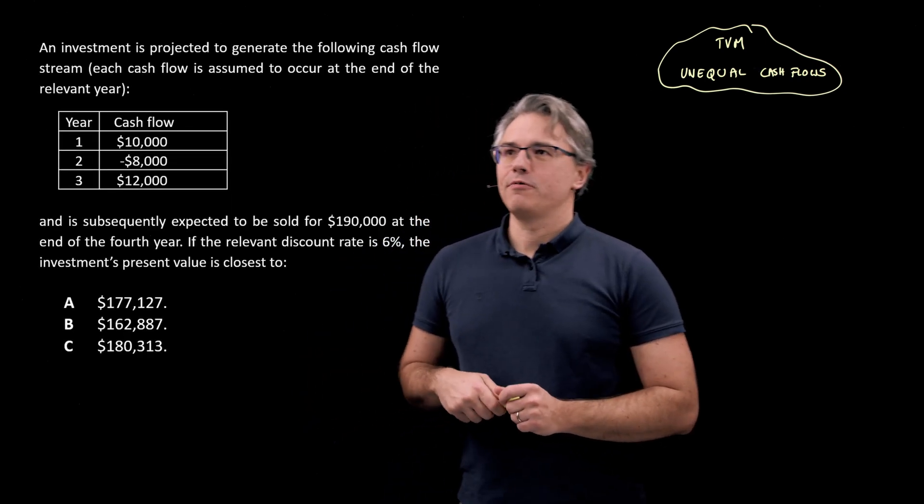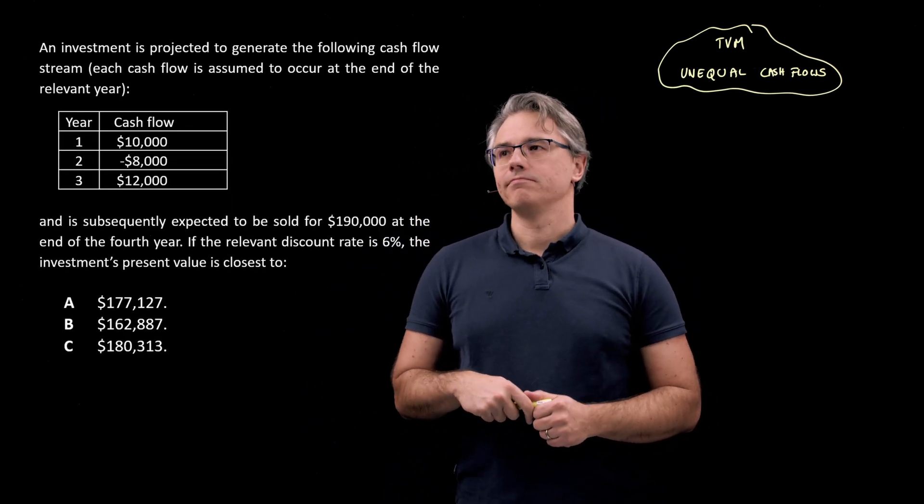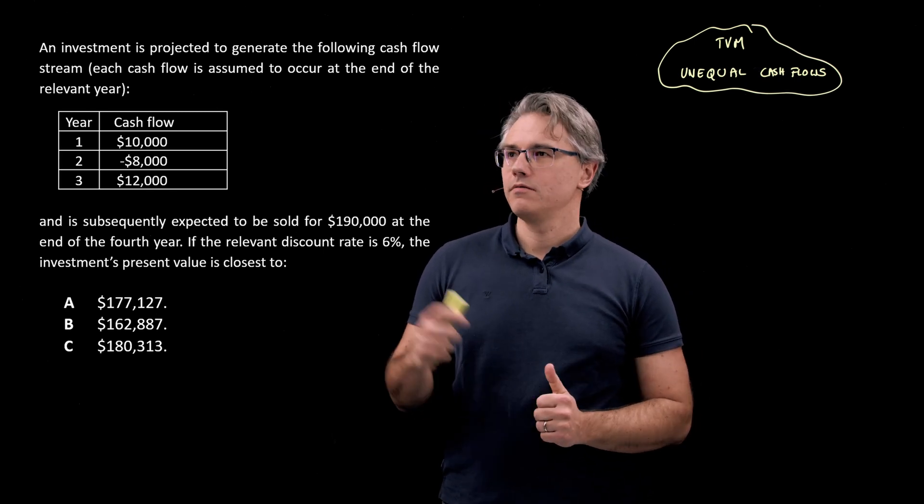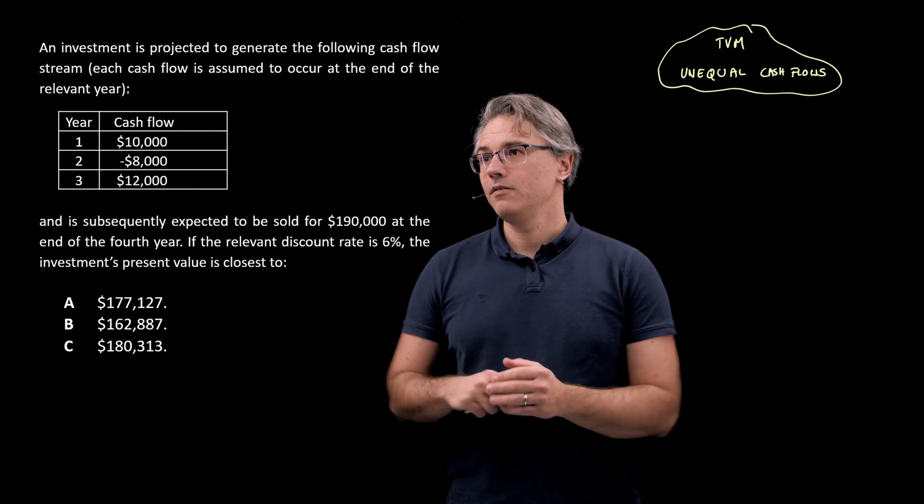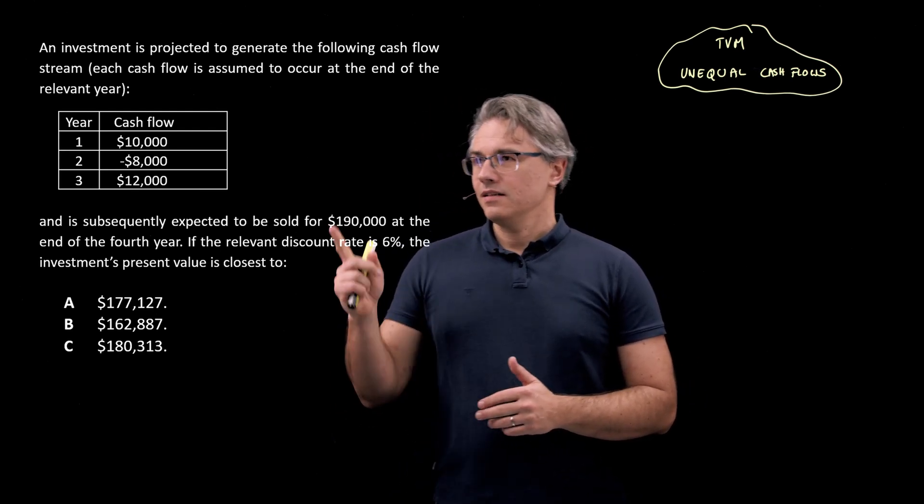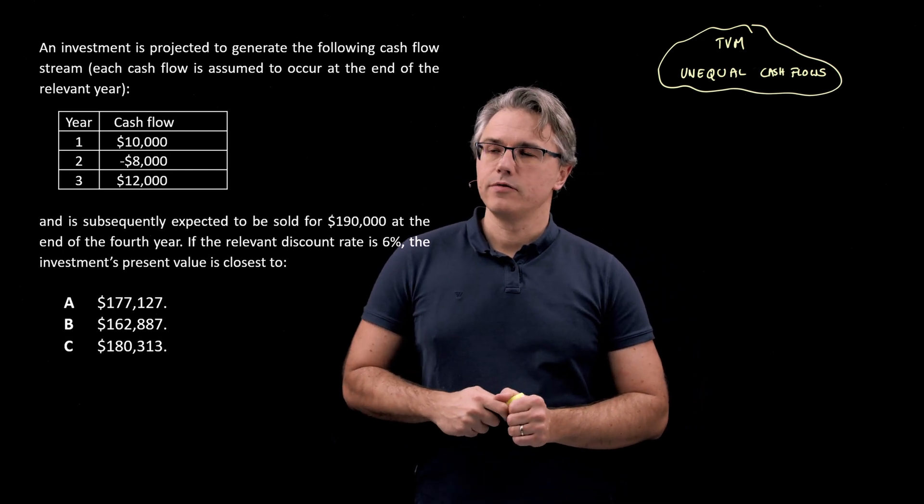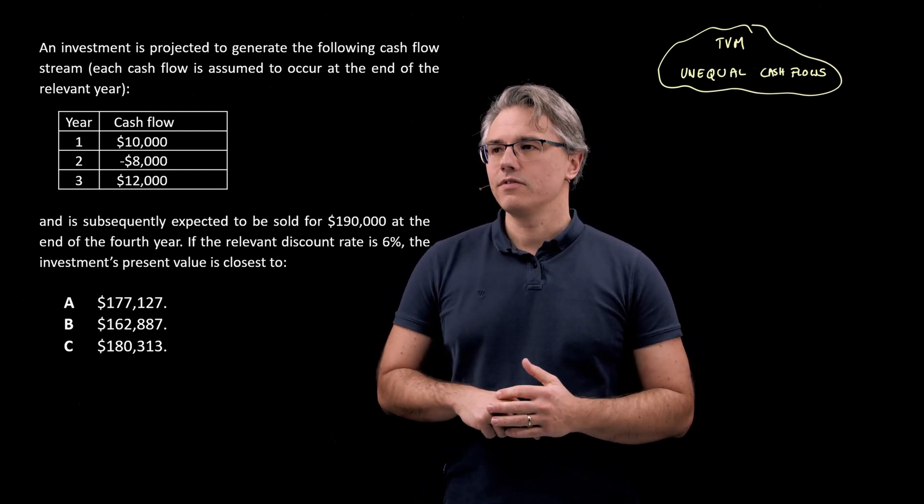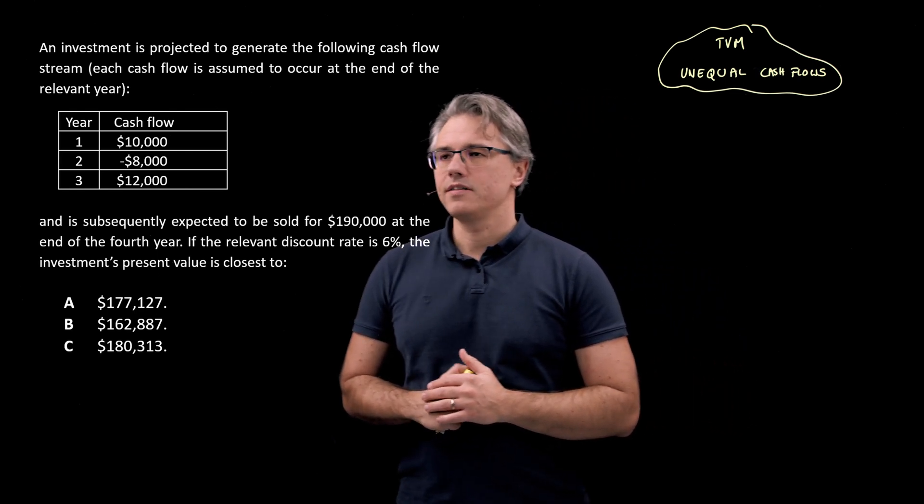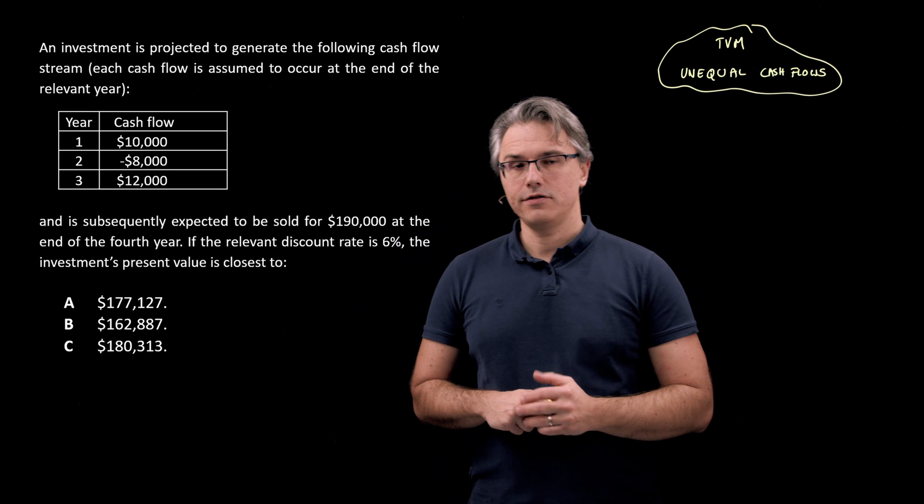An investment is projected to generate the following cash flow stream. Each cash flow is assumed to occur at the end of the relevant year. So you've got the cash flows, including one negative cash flow there. And is subsequently expected to be sold for $190,000 at the end of the fourth year. So that's our final cash flow there. If the relevant discount rate is 6%, the investment's present value is closest to.